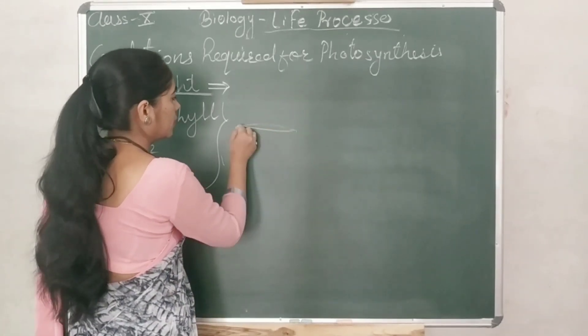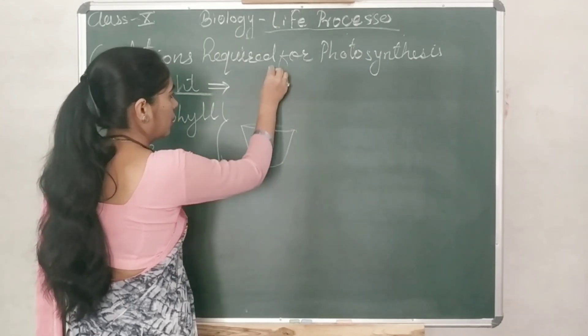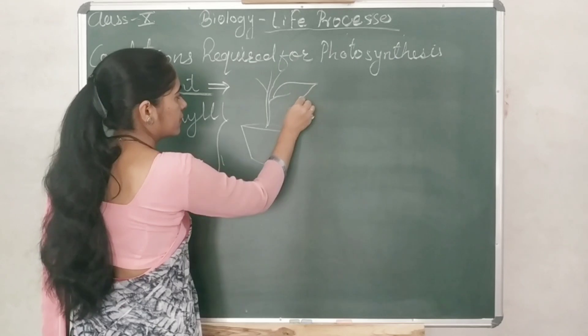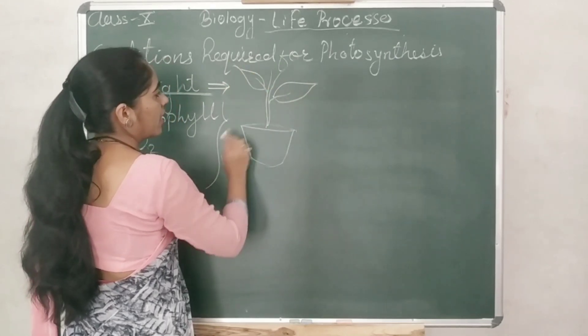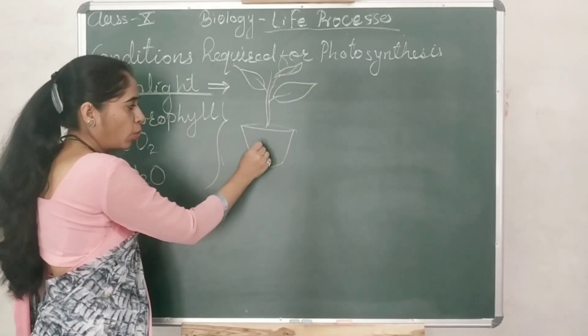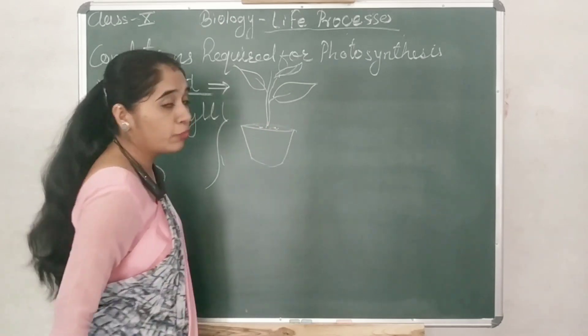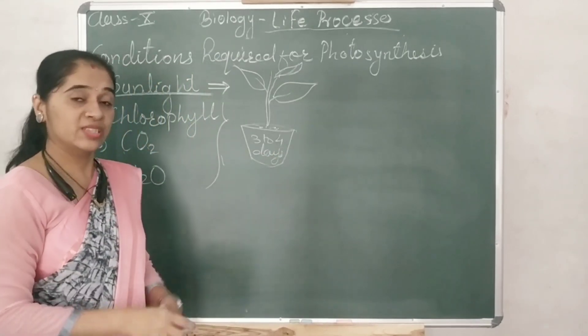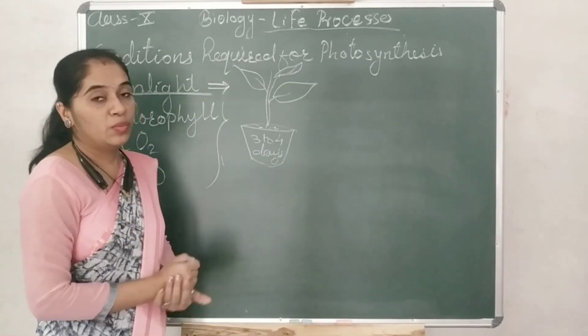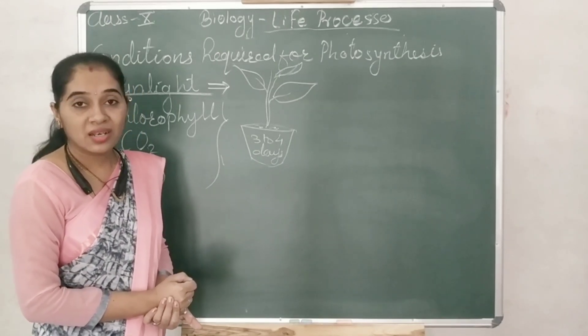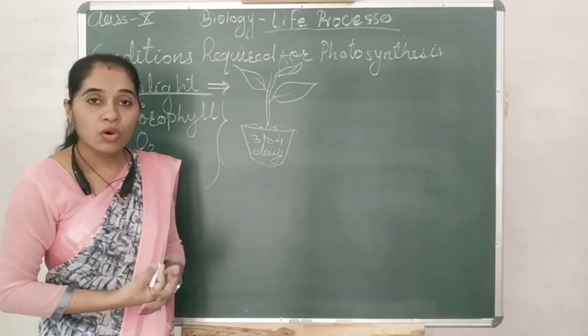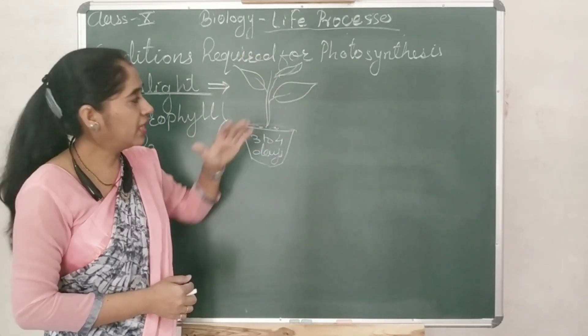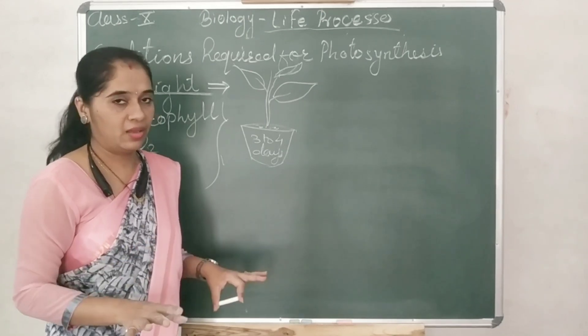Listen carefully, this is quite important. When we have to start the experiment for checking whether the sunlight is necessary for the process of photosynthesis, we have to take one potted plant. Before we start with that, what you have to do? You have to keep this pot into the dark for three to four days. Why? Because leaves store the glucose they produce in the form of starch. When we will keep it into the dark, they will not undergo the process of photosynthesis. That we have to prove.